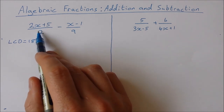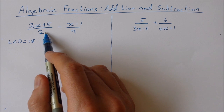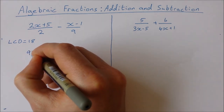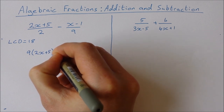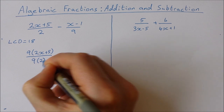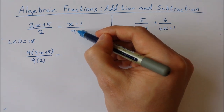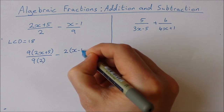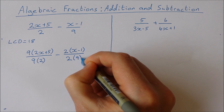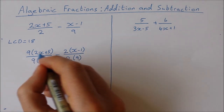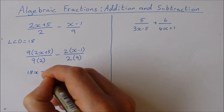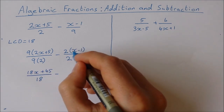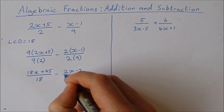For the first fraction, to change 2 into 18 I multiply it by 9. If I multiply the denominator by 9 then I have to multiply the numerator by 9 also, so I get 9 times (2x plus 5) over 9 times 2. For the second fraction, I multiply the 9 by 2, so I also multiply the top by 2, giving 2 times (x minus 1) over 2 times 9. Expanding: 9 times 2x gives 18x plus 45, all over 18, minus 2x minus 2, also over 18.